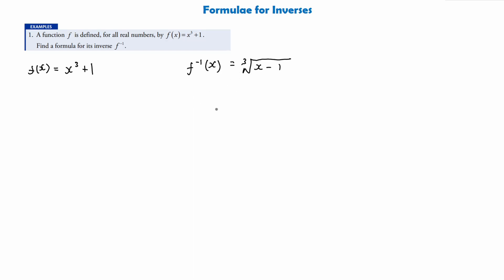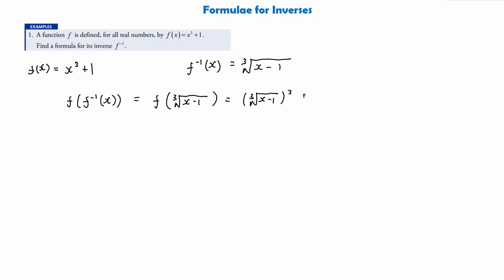This next part you won't have to do in the exam, but I'm showing it to help demonstrate why this is the inverse. If we do f of the inverse function, we get f of the cube root of x minus 1, which plugging into the formula gives (cube root of x minus 1) all cubed plus 1. The cube root and the cubed cancel out, leaving x minus 1 plus 1, which equals x.